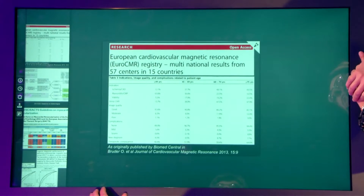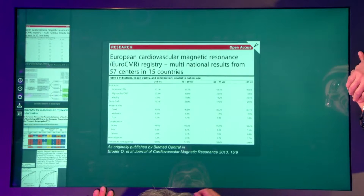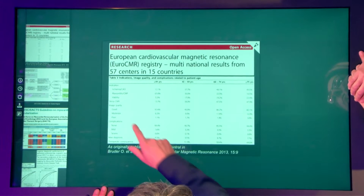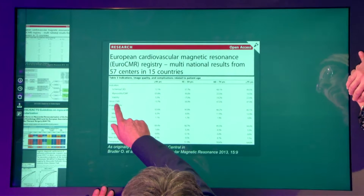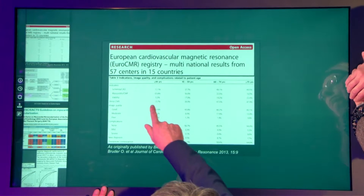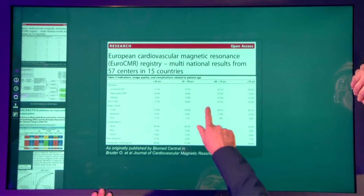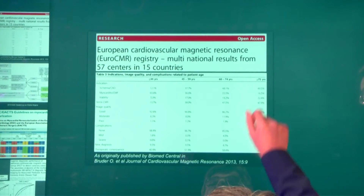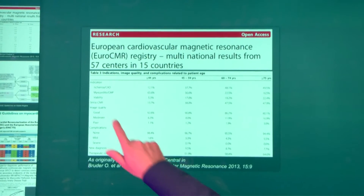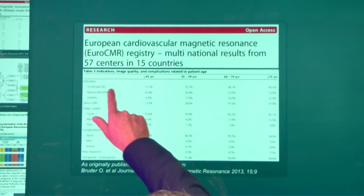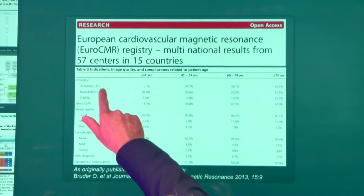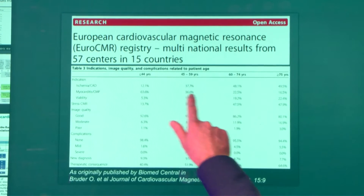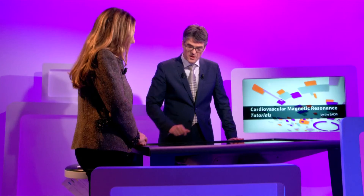I can show you some data from the EuroCMR registry showing that stress CMR is one of the main indications, increasing up to nearly 50% in the elderly population. And the question whether a patient has ischemic heart disease or coronary artery disease also forms the bulk of the referrals.